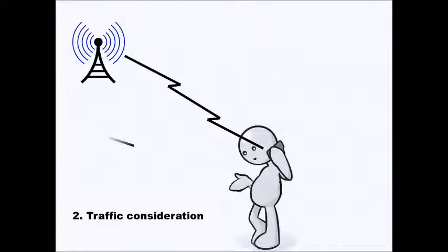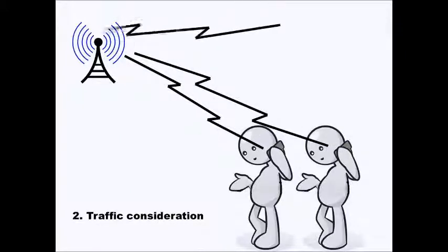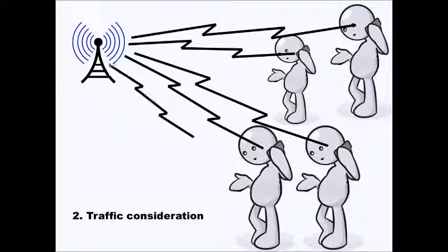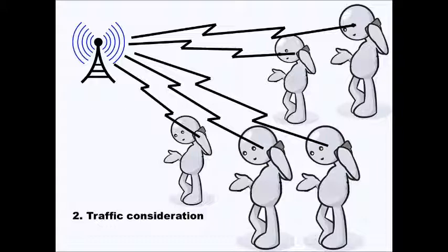The second point is traffic consideration. Ideally, available channels would have an equal number of active subscribers at one time. There is a limit in a cell for how many subscribers can use the frequency of that cell. If there is a limited number of users, a single base station transceiver can handle calls simultaneously. But if the number of users increases beyond the threshold value, it becomes necessary to find another antenna so that the extra users can communicate using the antenna of other cells.